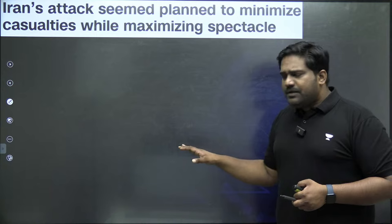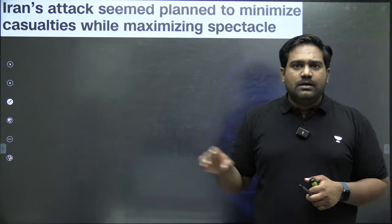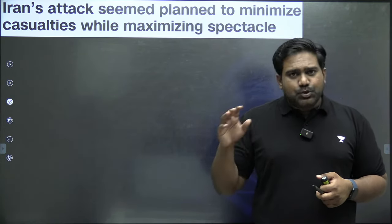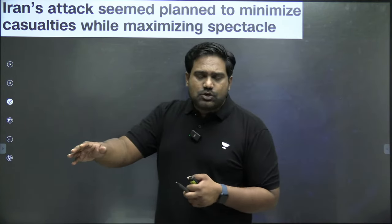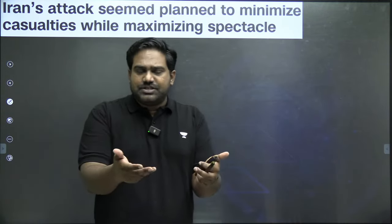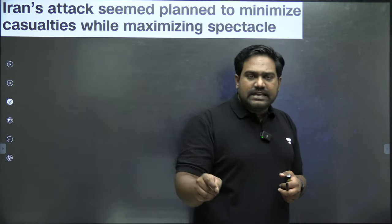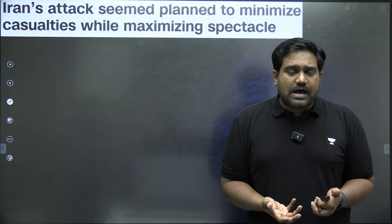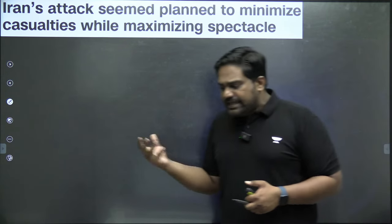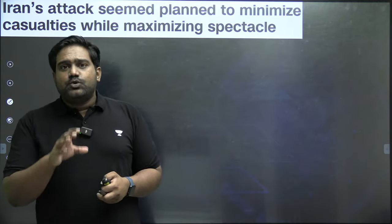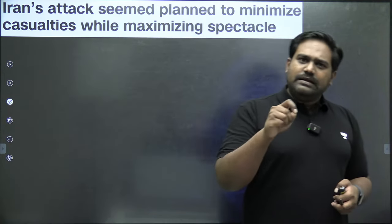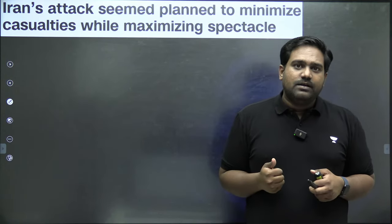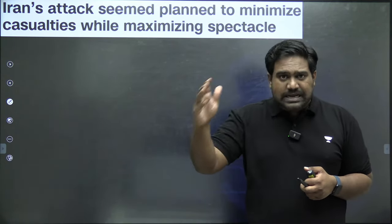Eventually, what does this lead us to conclude? The conclusion is that the attack was largely a failure for all the hype and spectacle. No significant damage was caused. Majority of the missiles didn't even reach Israel — they were already shot down. Very few landed in Israeli territory, causing minimal damage. Just a few injuries, no casualties reported by Israel as of now, and maybe some casualties in Jordan. Nothing else was achieved. This gives rise to a very interesting theory: did Iran deliberately design the attack to fail? Some may wonder what the point is — but this could simply be a show of strength, a symbolic attack.